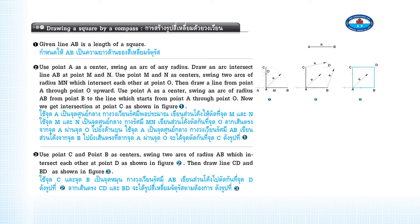Use point A as a center. Swing an arc of any radius. Draw an arc intersecting line AB at points M and N. Use points M and N as centers; swing two arcs of radius M and N which intersect each other at point O. Then draw a line from point A through point O upward.